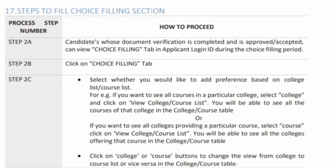Just click on that choice filling tab. It will show you two options: you can search based on the college list or the course list. For example, you select the college list because you know which particular colleges you want to apply — you want to select the college and then within the college select the course. The second option is if you want to select based on the course — for example, somebody is only looking to study aeronautical engineering. Since aeronautical engineering is not offered in all colleges, they will select the second option based on course, and will be able to see all colleges offering aeronautical engineering.